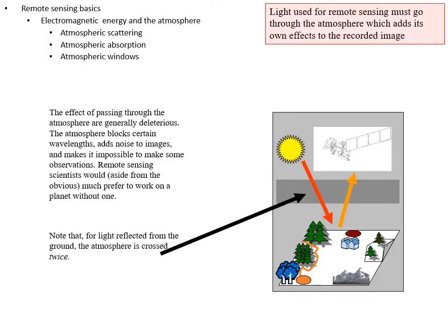We can follow the path of light as it goes from the sun, passes through the atmosphere, reflects off the ground, passes through the atmosphere again, and then reaches a sensor — it could be airborne or satellite-borne. The effects of passing through the atmosphere are generally bad. We've seen the atmosphere block certain wavelengths, it adds noise to images, and it makes some observations impossible. Remote sensing scientists would, aside from the obvious, prefer to work on a planet without an atmosphere. It would be a lot easier.